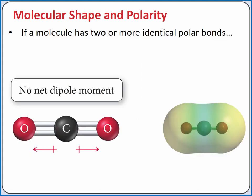If a molecule has two or more identical polar bonds, it may or may not be polar depending on the three-dimensional orientation of the polar bonds. For example, carbon dioxide has two polar carbon-oxygen double bonds. However, because carbon dioxide has a linear geometry, these two identical polar bonds cancel each other out and carbon dioxide is a nonpolar molecule.